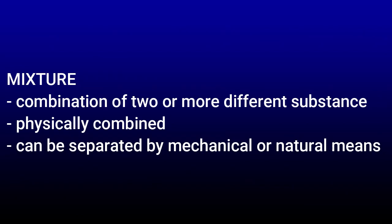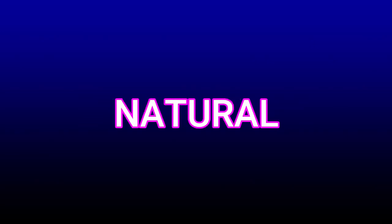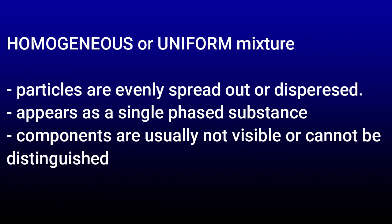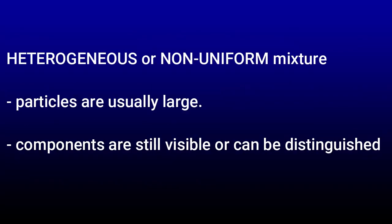To summarize our lesson: mixture is a combination of two or more different substances physically mixed together and can still be separated by mechanical or natural means. Homogeneous or uniform mixture is a type of mixture with particles that are evenly spread out, appears as a single substance, and the components are usually no longer visible or distinguishable. Heterogeneous or non-uniform mixture is a mixture with particles that are usually large and the components are still visible or distinguishable.